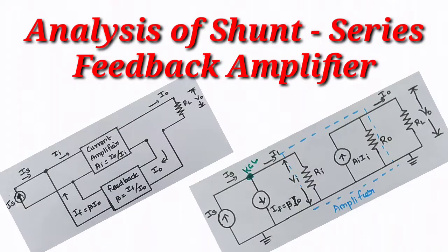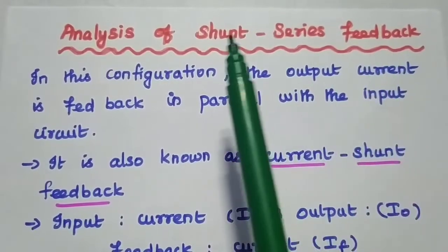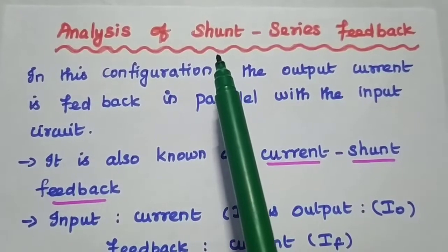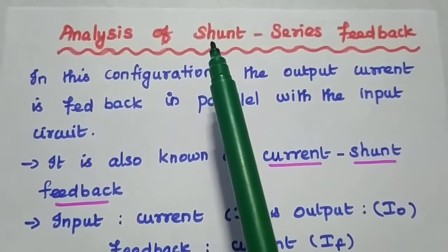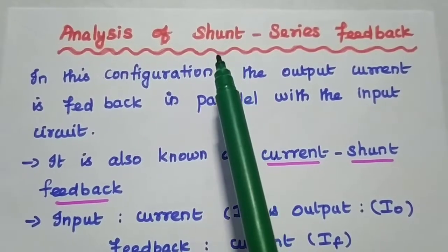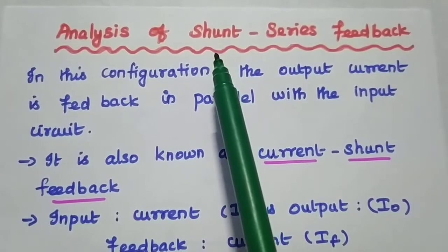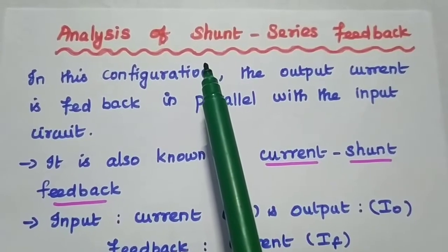Dear students, now we are going to analyze shunt series feedback amplifier in detail. In shunt series feedback method, the first term represents the way of mixing the feedback signal with the input signal. For shunt mixing, the current feedback signal is connected in parallel with the input signal.